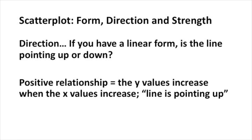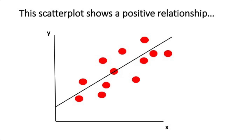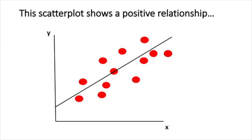The second key characteristic of a scatter plot is its direction. If you have a linear form, the question is whether the line is pointing up or down. If you have a positive relationship, the y values increase when the x values increase — in other words, the line is pointing up. This is an example of a scatter plot that shows a positive relationship. We've established that there's a line going through the scatter plot, and it's upward sloping, so when the x values increase, the y values increase as well.